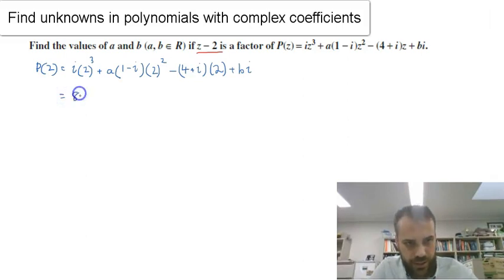Expanding this gives us 8i. Then it's 4 times a times 1, so 4a. 4 times a times negative i. And expanding this. Now this is all expanded. Now remember that it's going to be equal to 0, because we've subbed in our 2 here, and that was a zero.